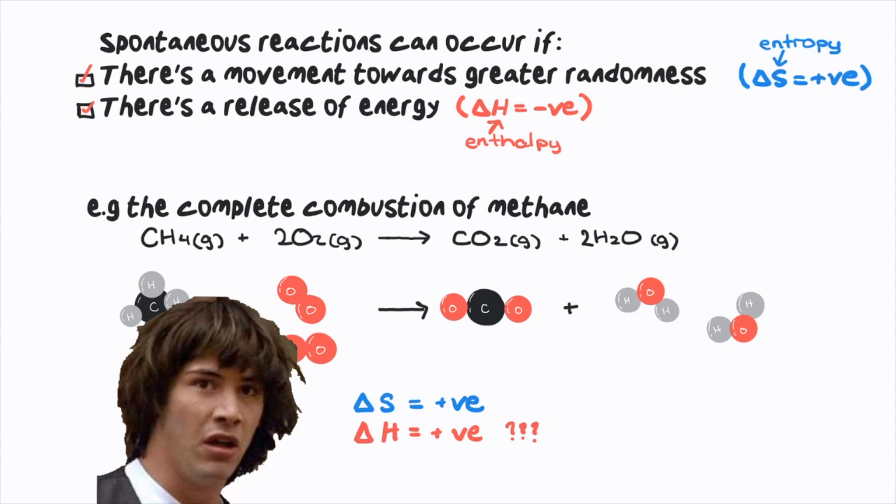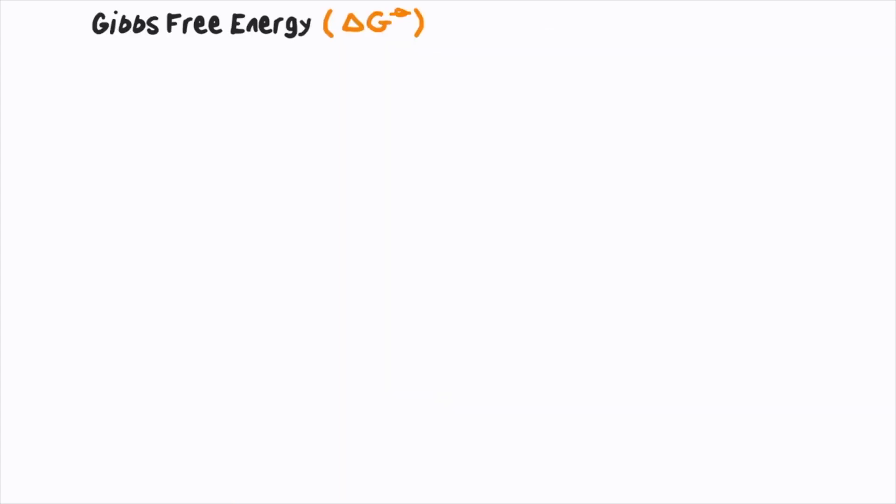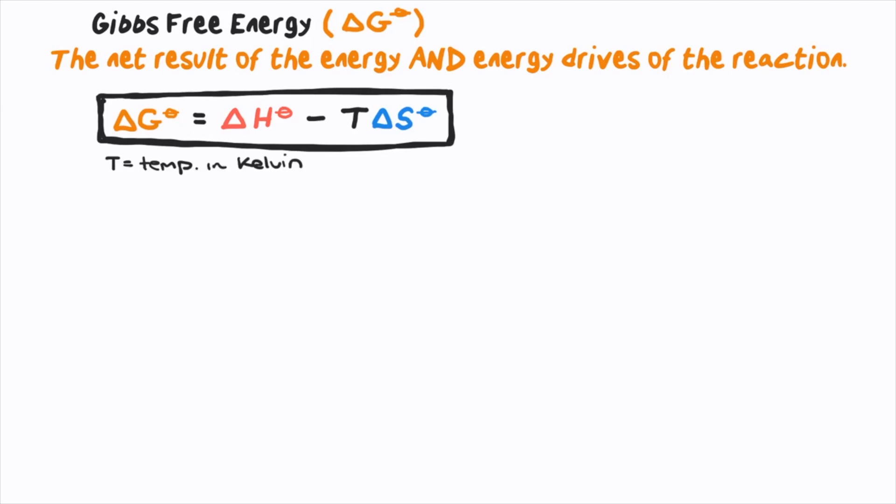Gibbs free energy allows us to determine spontaneity. This is the measure of the net result of the energy and entropy drives of the reaction. It's calculated using this, where T is in Kelvin, all in their standard states. If delta G is negative, then the reaction will occur spontaneously. If delta G is positive, then it will not occur spontaneously.